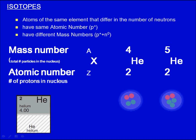Atoms of the same element that differ in the number of neutrons are called isotopes. They have the same atomic number, that's number of protons, but they have different mass numbers, the sum of protons and neutrons.